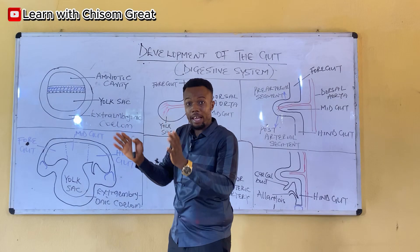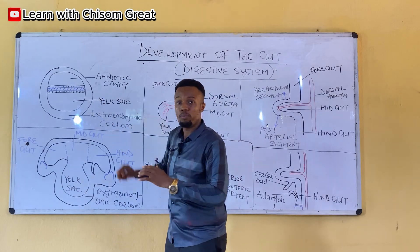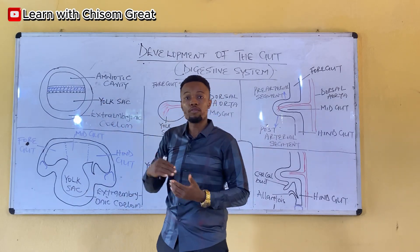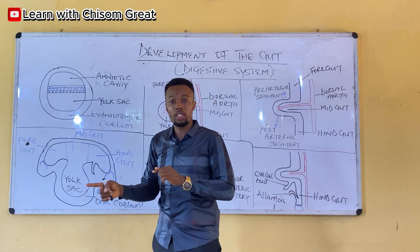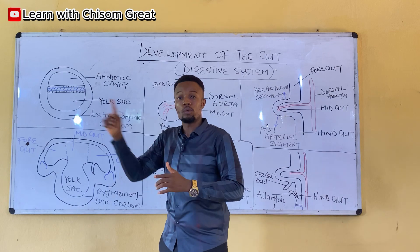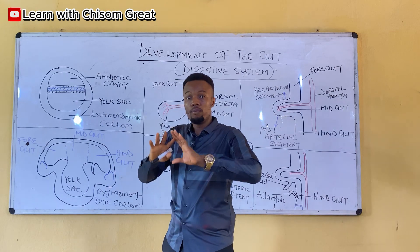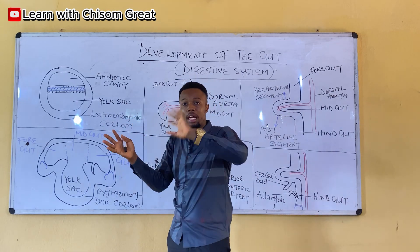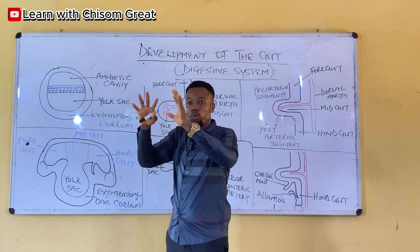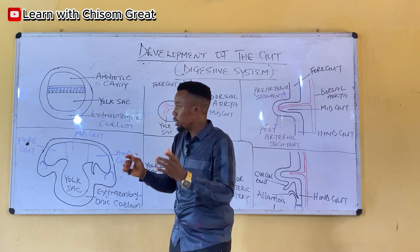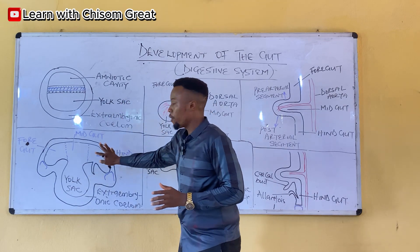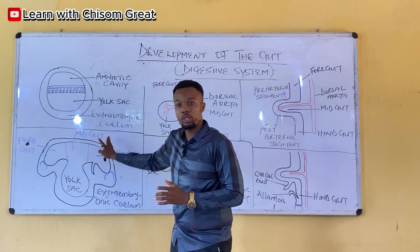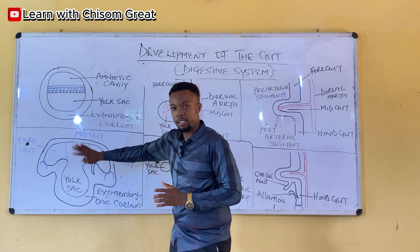The embryo looks like a disc, but by the end of the third week going into the fourth week, folding happens. When the head and tail folding occurred, the embryo changes shape significantly.